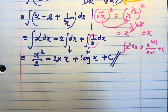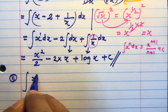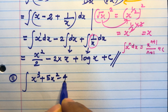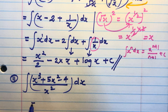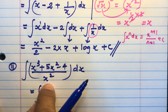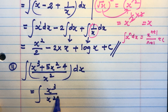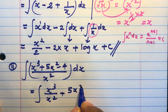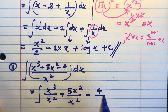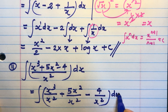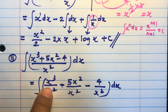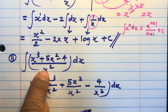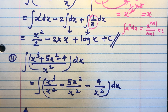Question number 11. Integral of (x³ + 5x² − 4)/x² dx. Step 1 is to divide all the terms by x²: x³/x² + 5x²/x² − 4/x², all into dx.